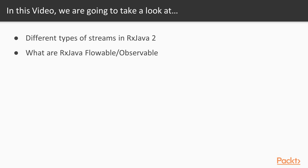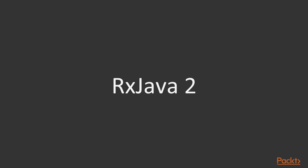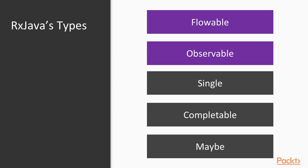In this video, we are going to take a look at the difference between the different types of streams in RxJava 2, and what are RxJava flowable and observable — the main stream types in RxJava. In this course, we are going to be talking about RxJava 2, and with RxJava 2 we have a different set of reactive stream types. These are the reactive RxJava types.